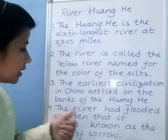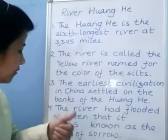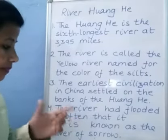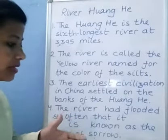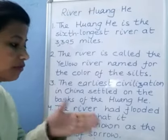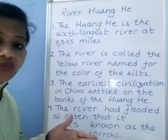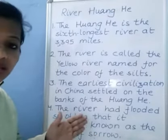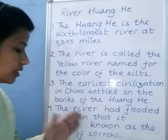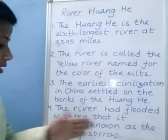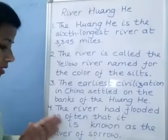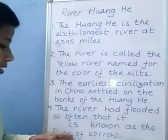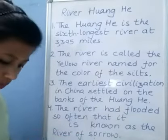The river has flooded so often. Every year, the situation of flood occurs in that region. That's why it is known as the River of Sorrow.